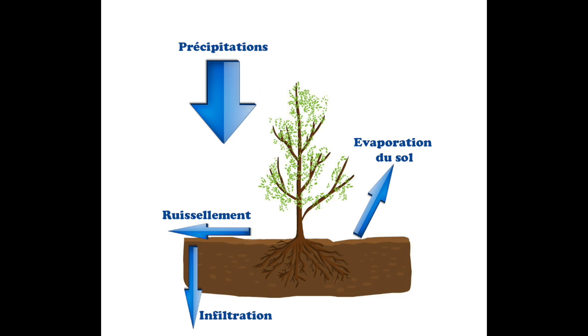Une partie de cette eau va également s'évaporer directement depuis le sol. Votre eau aura été en partie consommée par les végétaux, ces végétaux transpirent, et vous perdez donc de nouveau une partie de cette eau par transpiration du feuillage des végétaux.